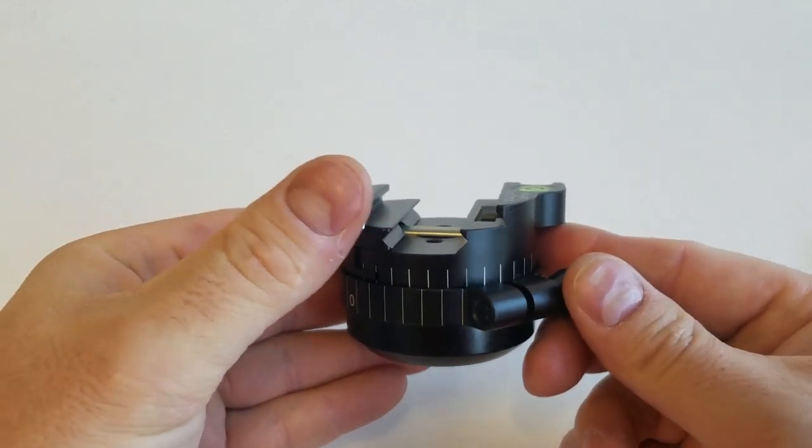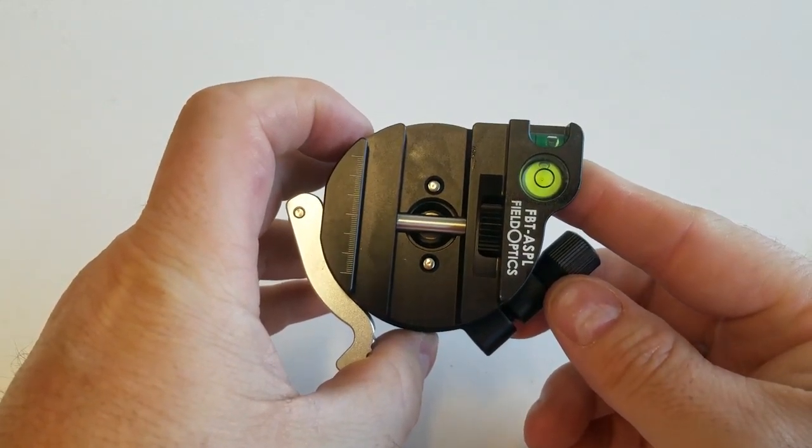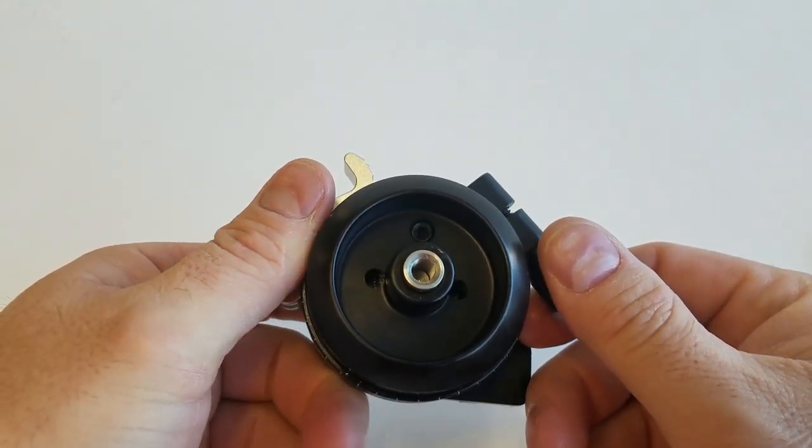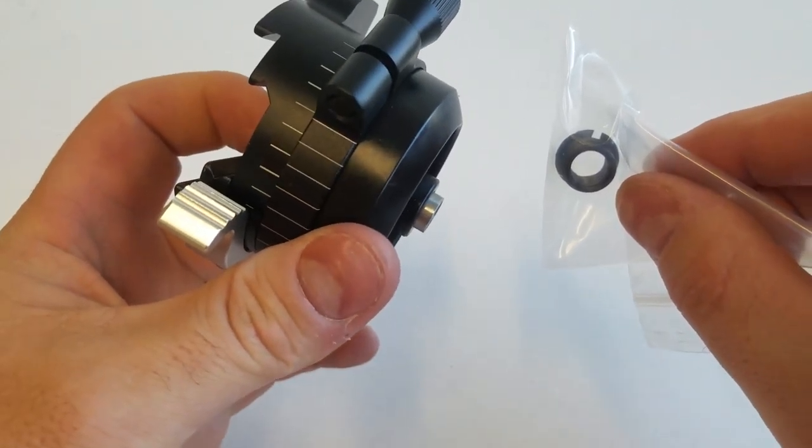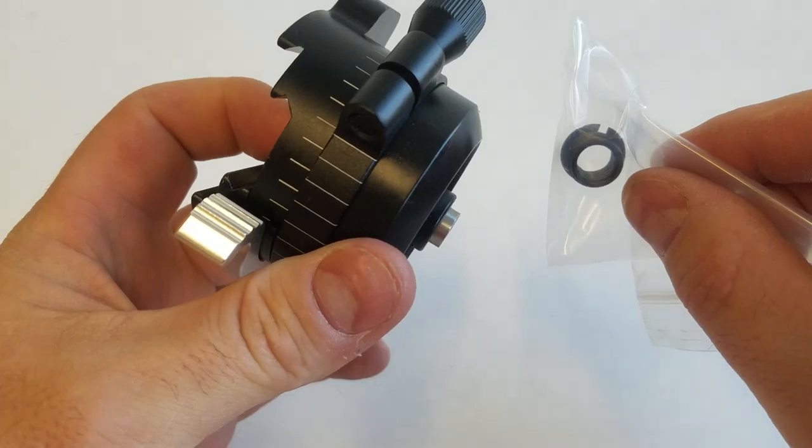But there it is, fully installed, the Arca Swiss Picatini lever clamp. Again, do not put the insert nut in when you're doing it on to the top of the Precision Bolt Tensioner.